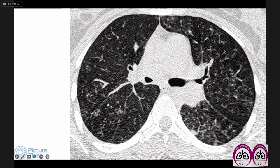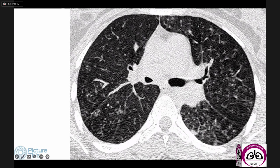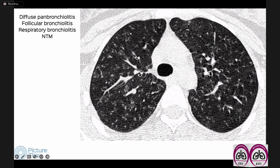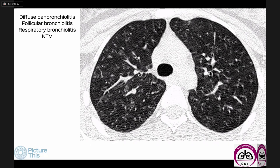Then there is a more diffuse form — softer lesions, less dense, more peripheral and bilateral. We call this diffuse inflammatory bronchiolitis. The CT alone cannot differentiate the etiology; everything depends on history. If the patient is from Korea or Japan, we use the term diffuse pan-bronchiolitis. If the patient has rheumatoid arthritis, it could be follicular bronchiolitis. In a smoker it would be respiratory bronchiolitis. If slightly immunocompromised or older, it could be NTM — all can look the same.